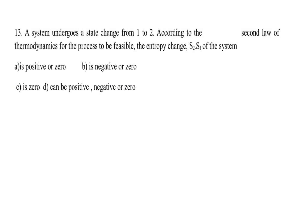A system undergoes a state change from 1 to 2. According to the second law of thermodynamics, for the process to be feasible, the entropy change (S2 − S1) of the system can be positive, negative, or zero. D is the answer.